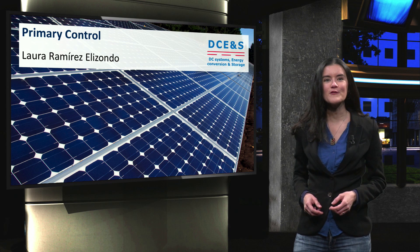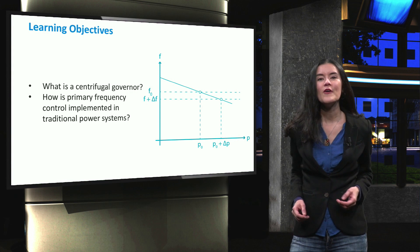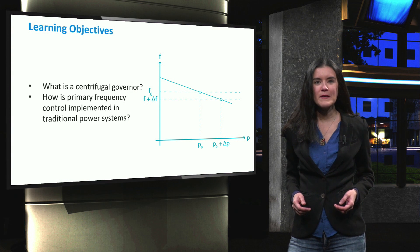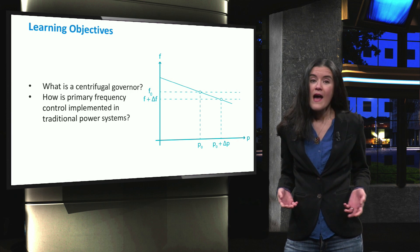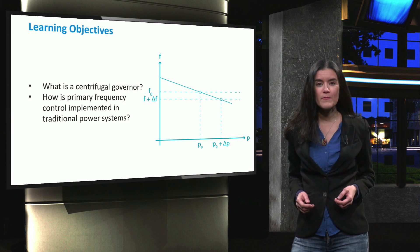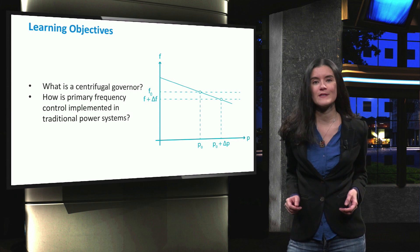In this video, we will focus on how primary control is applied in conventional power systems. In detail, we will address the role of the speed governor in primary control, we will see how the active power balance can be restored, and we will look at the equations that are used to mathematically describe the primary control for a system with one and multiple generation units.